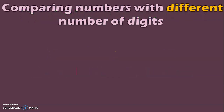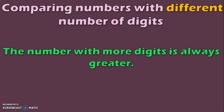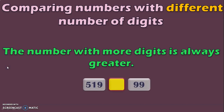First, let us begin with comparing numbers with a different number of digits. The number with more digits is always greater — this is the simple rule to remember. For example, we have 519 which is a three-digit number and 99 which is a two-digit number. We know that a three-digit number is greater than a two-digit number, so you put the greater than symbol there.